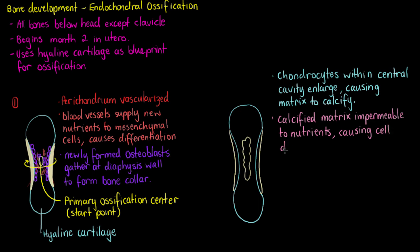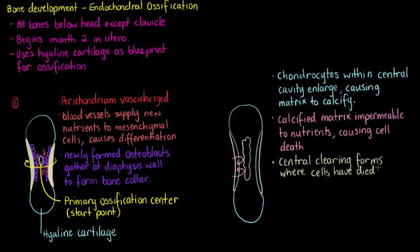When those nutrients can no longer come in, it causes cell death of those cells in that area. Nutrients are trying to go in but can no longer diffuse through. Once the cells have died and the matrix begins to deteriorate, a central clearing starts to form. When hyaline cartilage is deteriorating and a cavity forms, the structure is supported by the bone collar that has already formed around the outer edge of that diaphysis.